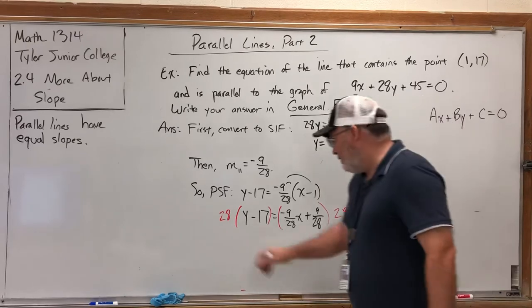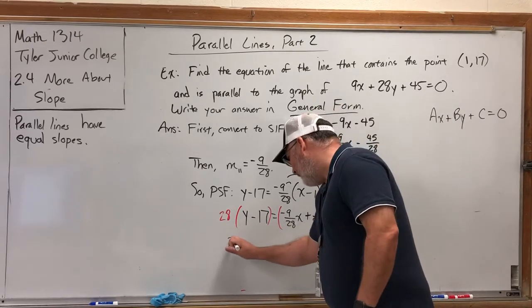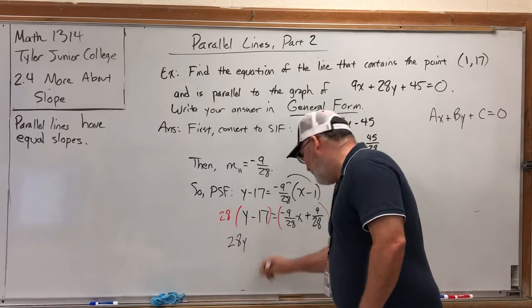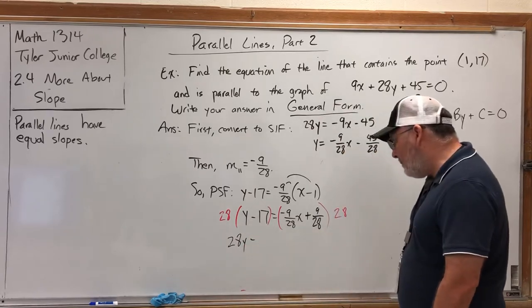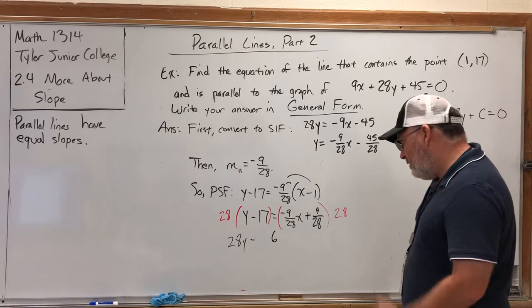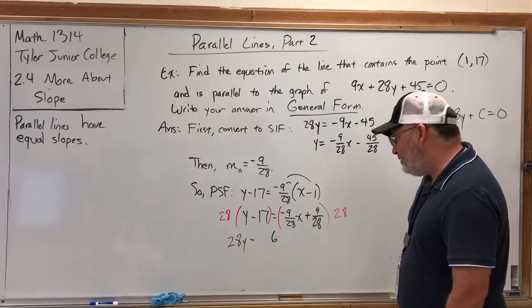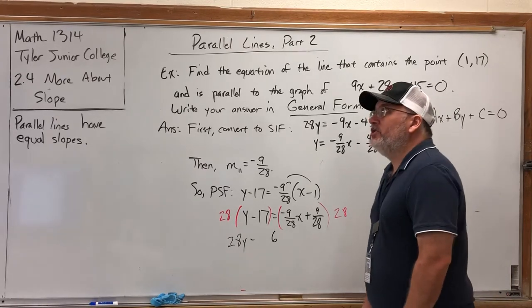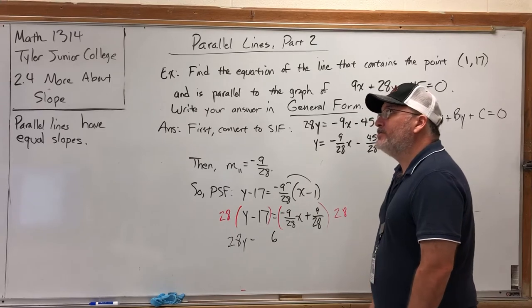On the left side we get 28 times Y, which is 28Y, minus 28 times 17. It ends in a 6. Give me a second here: 5 and 14 is 19 plus 8 is 27, 2 and 2 is 4. That should be 476, but I'm second-guessing myself there.